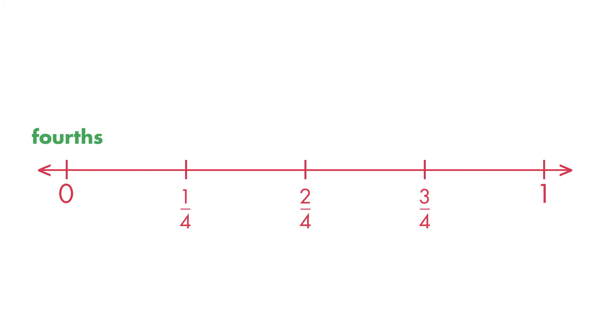One-fourth, two-fourths, three-fourths. Four-fourths is equal to one whole. Mark a dot on two-fourths to show how far you ran.